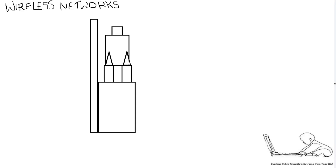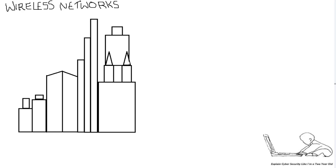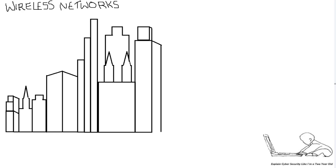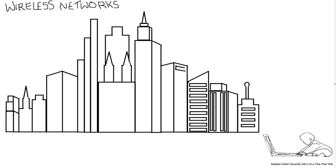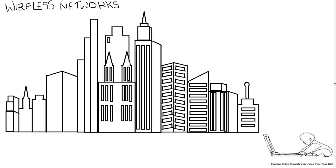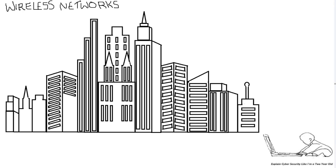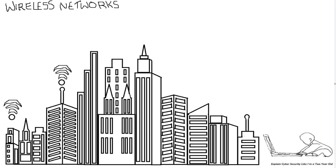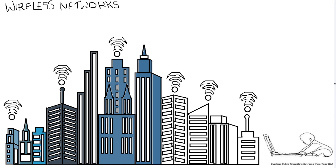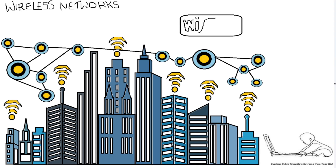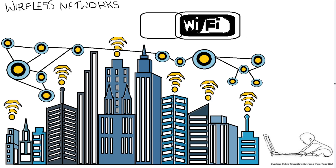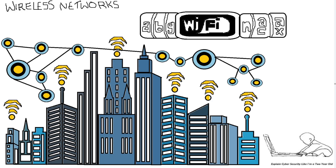Wireless networks are everywhere and will continue growing with the Internet of Things. But have you ever wondered how these wireless networks actually work? In today's technical video, we shall dissect the different types of wireless networks, such as WEP, WPS, and WPA, WPA2 and WPA3. We shall be focusing on Wi-Fi wireless security under the IEEE standard of 802.11.